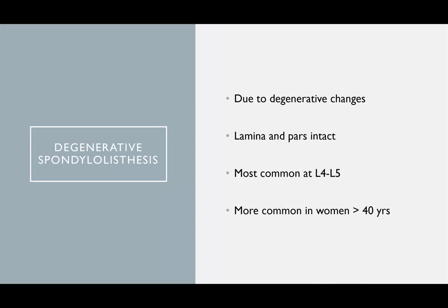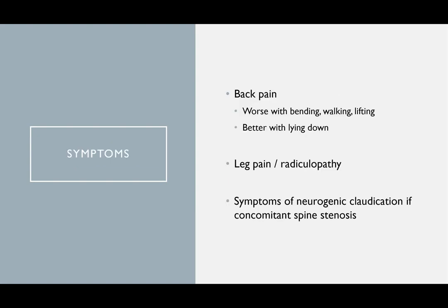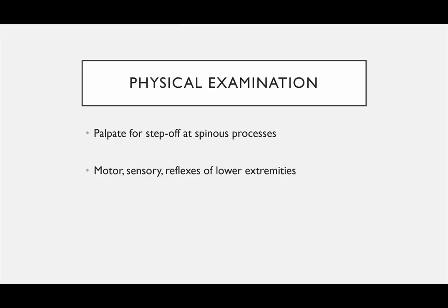Degenerative spondylolisthesis is due to degenerative changes. The lamina and pars are intact. It's most common at L4-L5, more common in women over 40. Patients have back pain that's worse with bending, walking, and lifting, and better with lying down. They can also have leg pain and radiculopathy, and if spinal stenosis is present, they can get neurogenic claudication. It goes hand in hand with lumbar degenerative disease.